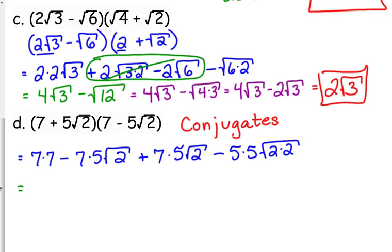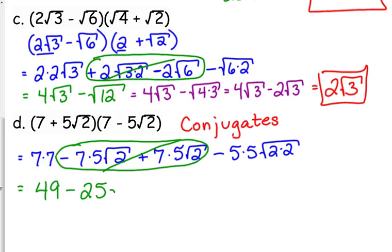Let's see what happens here. Seven times seven is forty-nine. We've got that same deal here where the outside and the inside are the same, but they differ by a sign. So the minus seven times five square root of two plus seven times five square root of two, those are going to go away. Five times five is twenty-five. Square root of four, what's the square root of four? Two. So forty-nine minus fifty, this gives us negative one. So we just multiplied two binomials with square roots in them and we ended up with just a whole number.